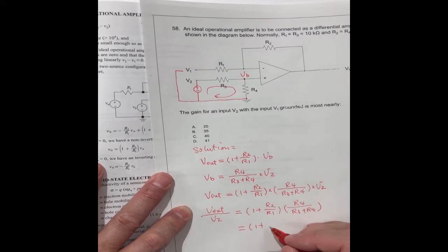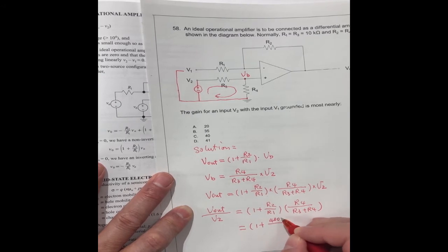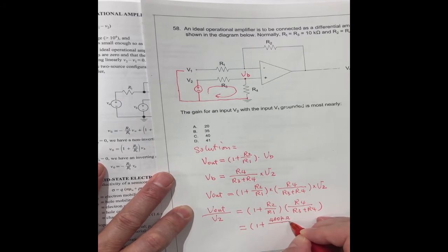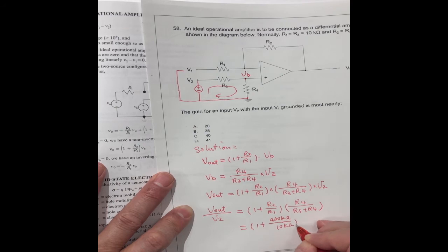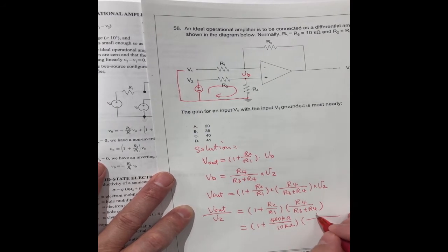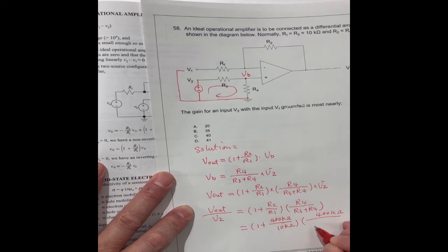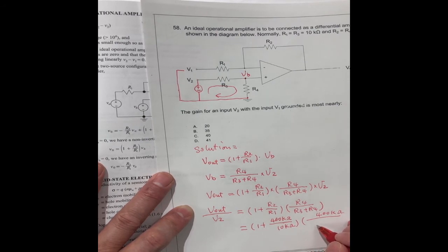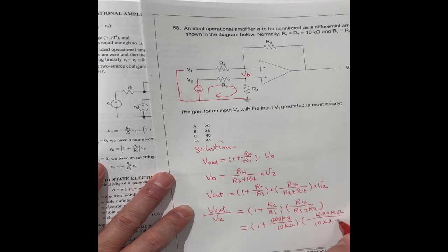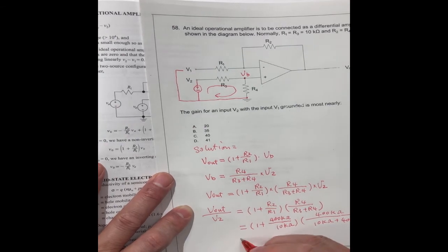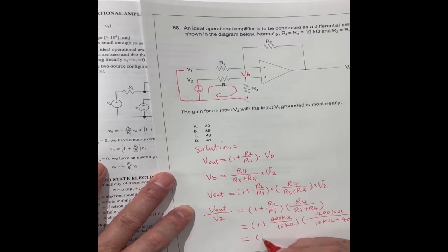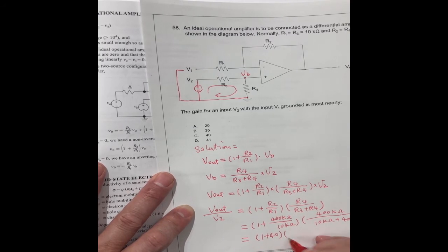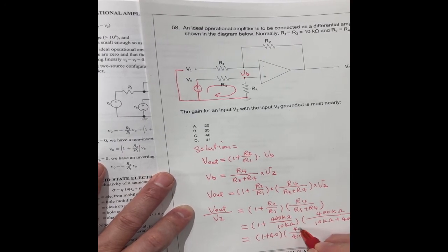R2 is 400 kΩ, and R1 is 10 kΩ. R4 is 400 kΩ. R3 is 10 kΩ plus 400 kΩ. What's the number? This is 1 plus 40. This is 410. This is 410.